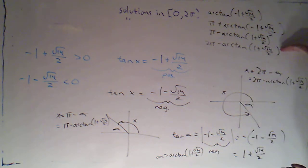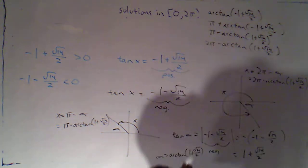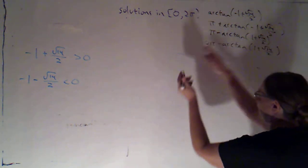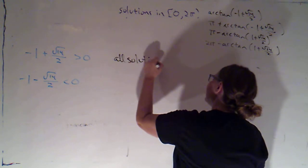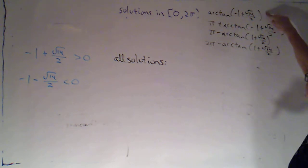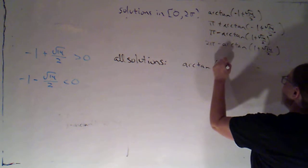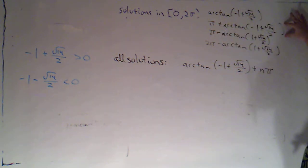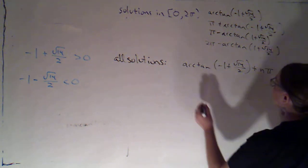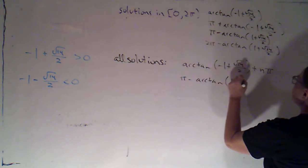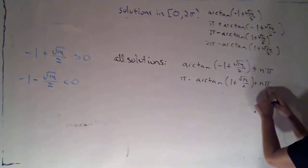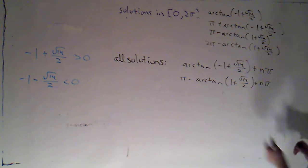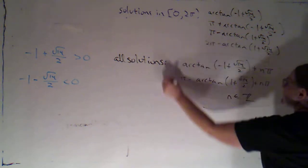Those are my four solutions between 0 and 2π. To write all solutions, I can take advantage of tangent's period of π — each pair of solutions is exactly π apart. So: x = arctan((−1 + √14) / 2) + nπ covers the first two. And x = π − arctan((1 + √14) / 2) + nπ covers the other two, where n is any integer. That gives all solutions.